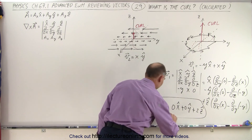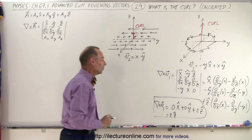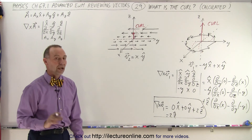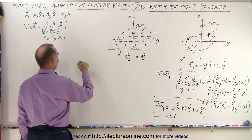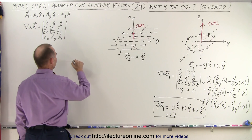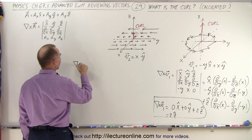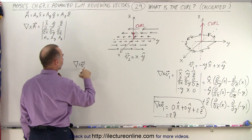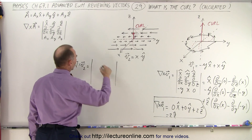So the curl of V1 is simply 2 in the z direction. Now we'll do the same for V2. We take the del operator and multiply it times V2.